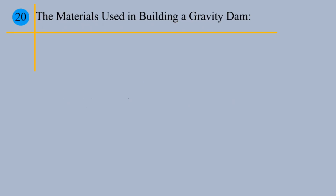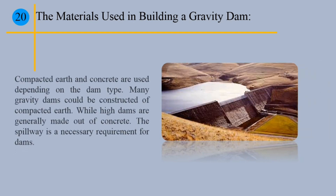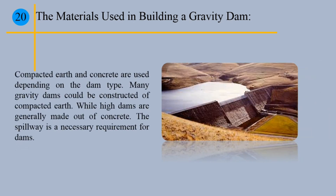Point 20: The materials used in building a gravity dam. Compacted earth and concrete are used depending on the dam type. Many gravity dams could be constructed of compacted earth, while high dams are generally made out of concrete. A spillway is a necessary requirement for dams.